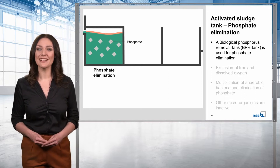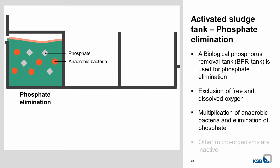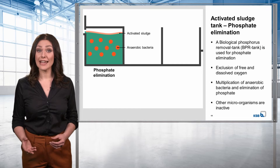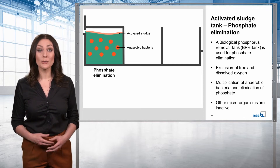Phosphate elimination takes place with the exclusion of free and dissolved oxygen. For this reason, BPR tanks are often covered. This environment creates optimum conditions for anaerobic bacteria to multiply and complete their task of eliminating phosphate. The other microorganisms in the wastewater are inactive during this stage, as there is either not enough oxygen or none at all.